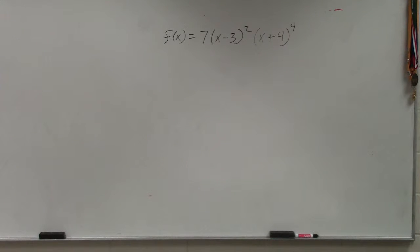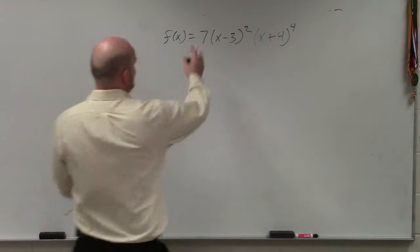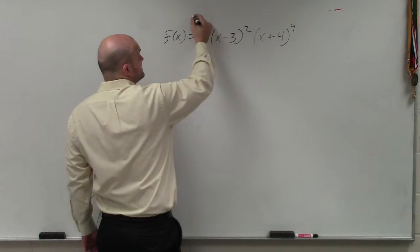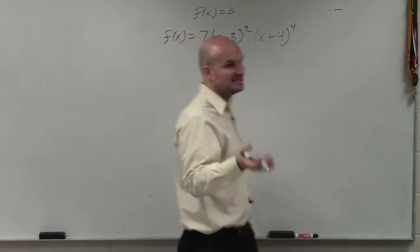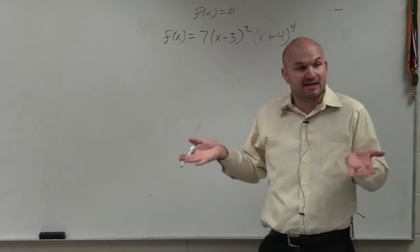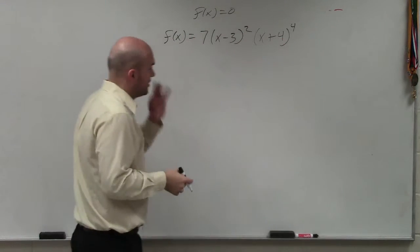The nice thing about it being in factored form is if they're asking you to find the zeros, which remember, the zeros are the x-intercepts. They're also when the function f(x) is equal to 0. So it's the values of x that make f(x) equal to 0.